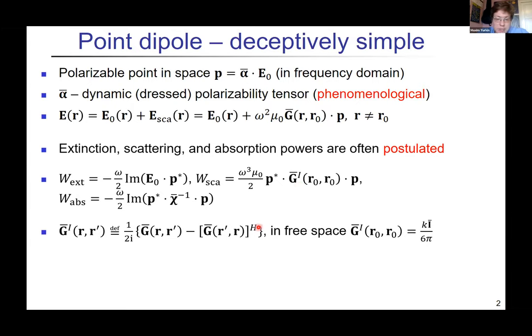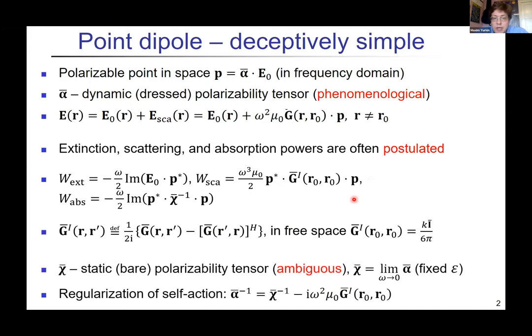For scattering we use Gᵢ which is the imaginary part of the Green's dyadic, or more generally the skew-Hermitian part. In free space it's basically the standard dyadic, but in some environment it can be more complex. In this phenomenological description we don't have χ, the static polarizability tensor. There is confusion with names in literature—I will use static or bare polarizability for χ, and α is the dynamic or dressed polarizability tensor.